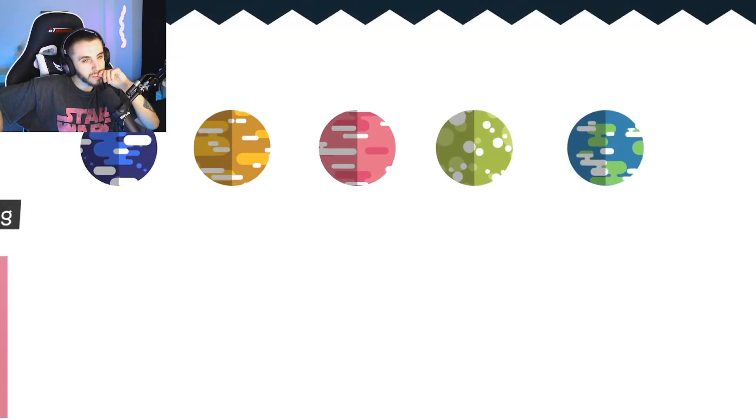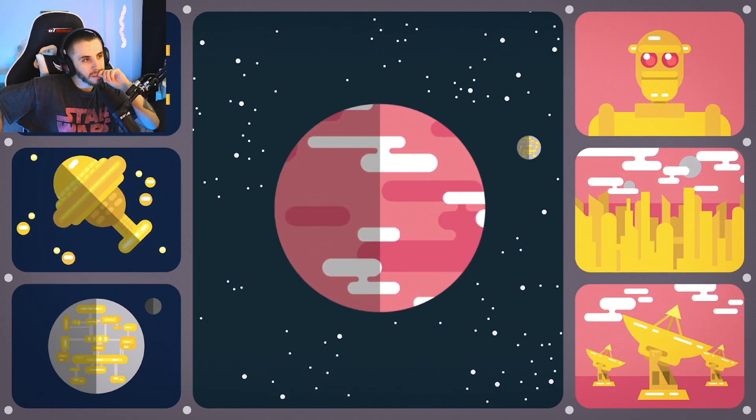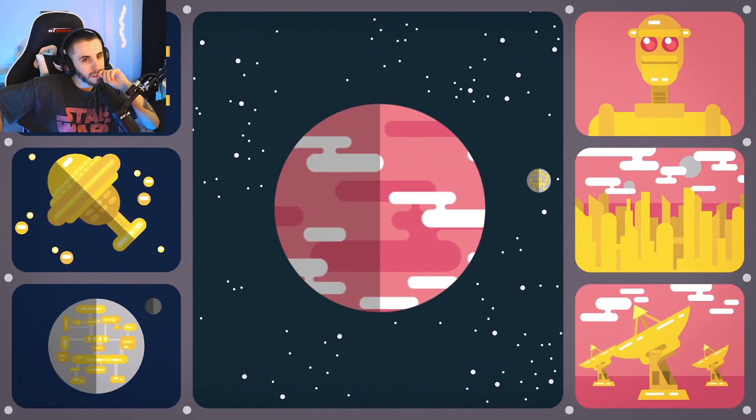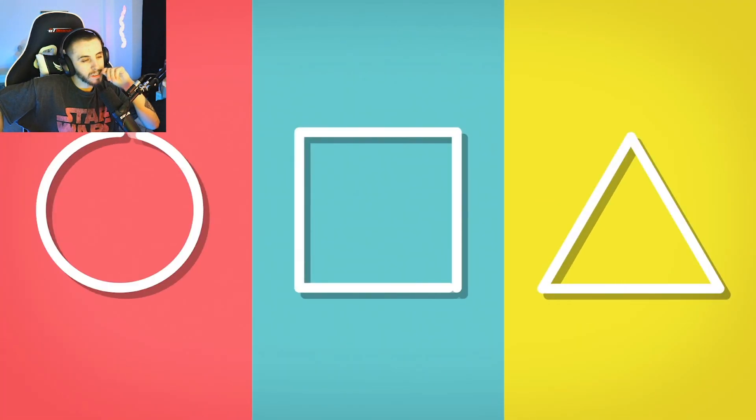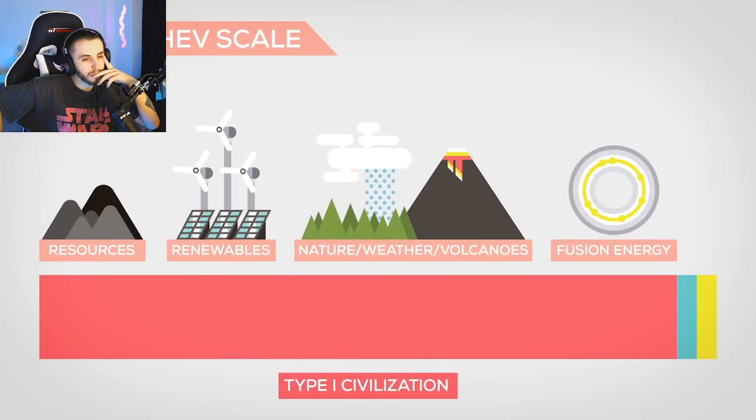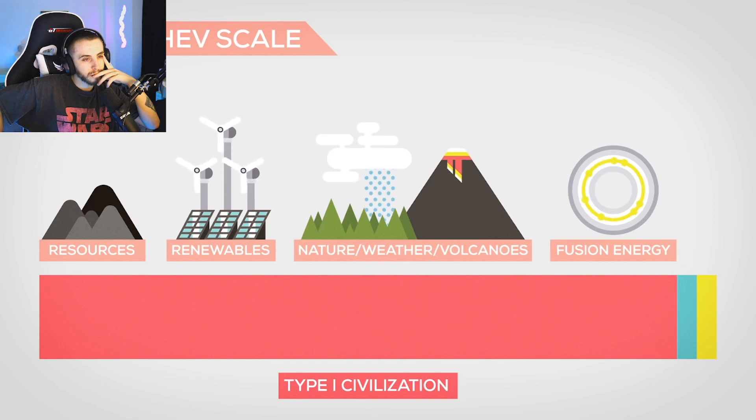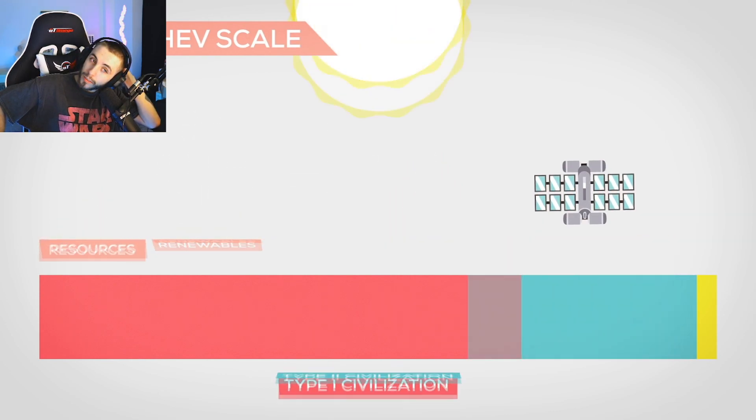If only a single one of them had developed into a space traveling super civilization, we would have noticed by now. What would such a civilization look like? There are three categories. A Type 1 civilization would be able to access the whole energy available on its planet. In case you're wondering, we're currently around 0.73 on the scale and we should reach Type 1 sometime in the next couple of hundred years.